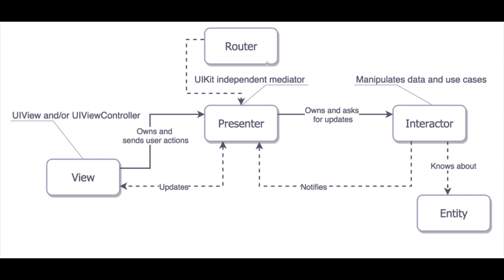The Interactor calls the server requesting the details of the video. The response comes back from the server with the data. Using the Entity — which holds the details like the image, the title, and the description of the video — we use JSON decoder to decode that data into our model. Once done, the Interactor tells the Presenter it has the model. The Presenter then updates the View with the data, so the user clicks on the cell, gets the data, and the Presenter displays it in the View. This is VIPER.